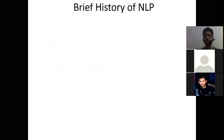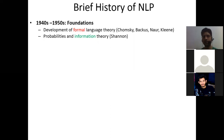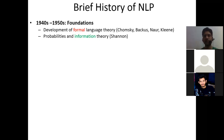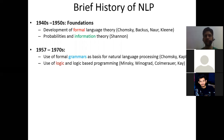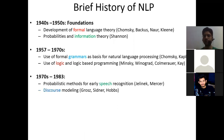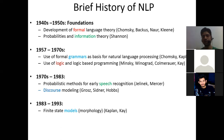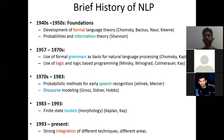A brief history of NLP: it all started in the 1940s. In the 1950s came the foundation of NLP with the development of formal language theory, information theory, and probabilistic methods. Then came the use of formal grammar as a basis for NLP, followed by logic-based programming. Next were probabilistic methods for speech recognition and discourse modeling, and finite state models from 1983 to 1993 for morphology. The present era involves strong integration of different techniques and different areas.